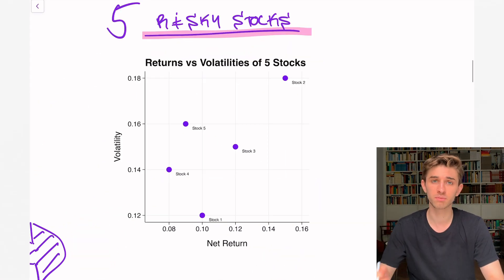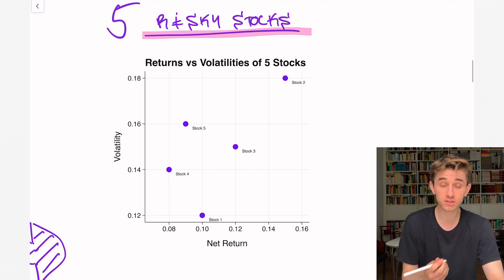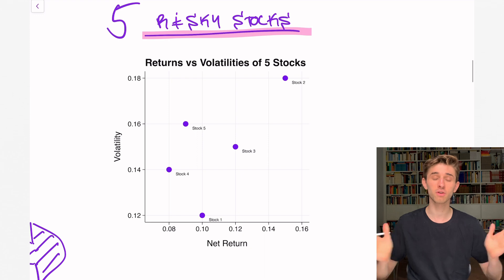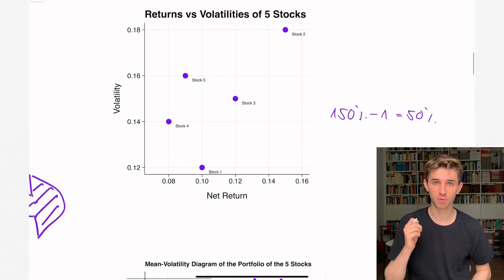Here, I have the return volatility profile of five different stocks. On the y-axis, you see the volatility of the stock. And on the x-axis, you see the net return. The net return is just defined as the gross return minus one. So with those five stocks, I now build portfolios.